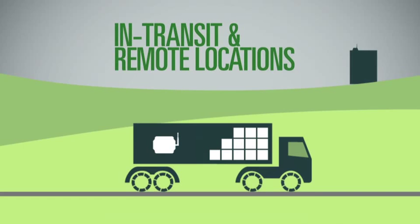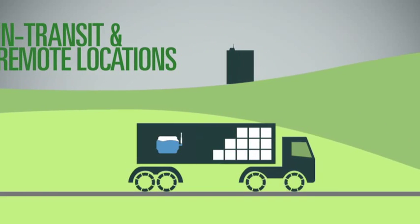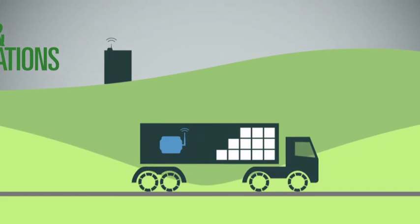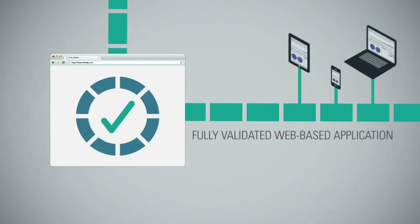For in-transit or remote locations, portable electronic data loggers collect conditions using onboard memory, then transmit their data back to the InfoTrack portal. Users can view all of their locations from a single login to our fully validated web-based application, which is accessible from almost any internet-enabled device.